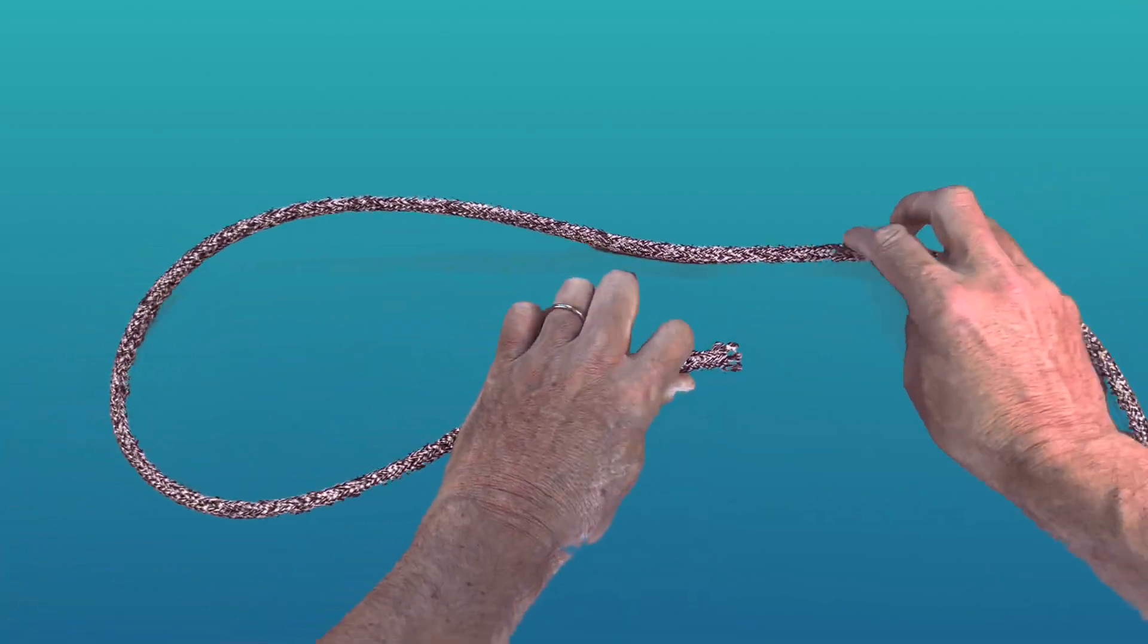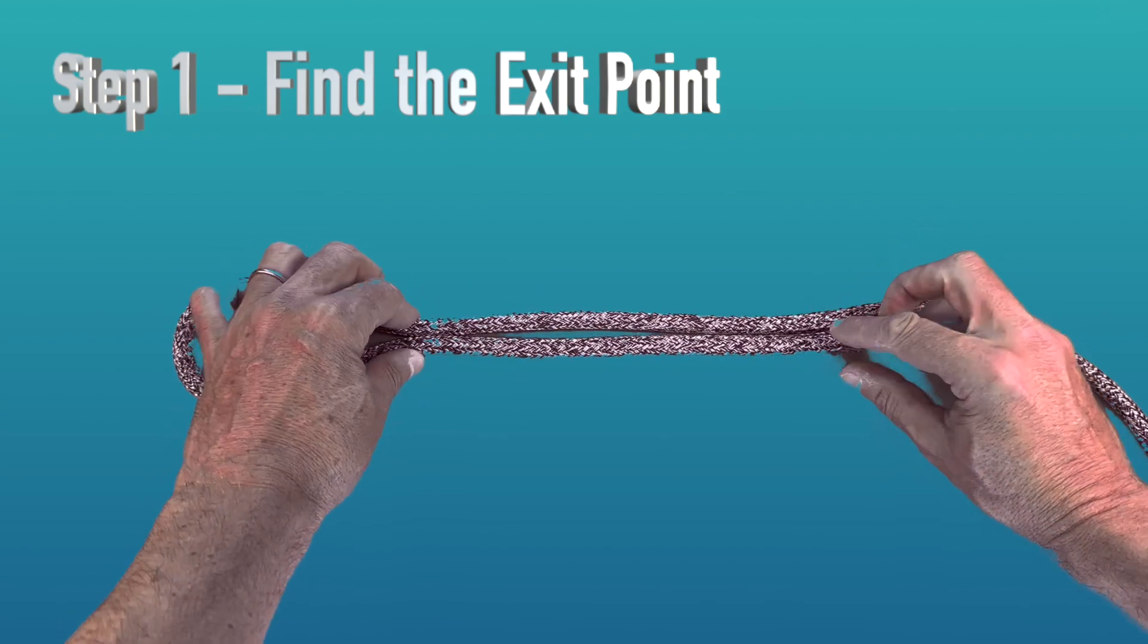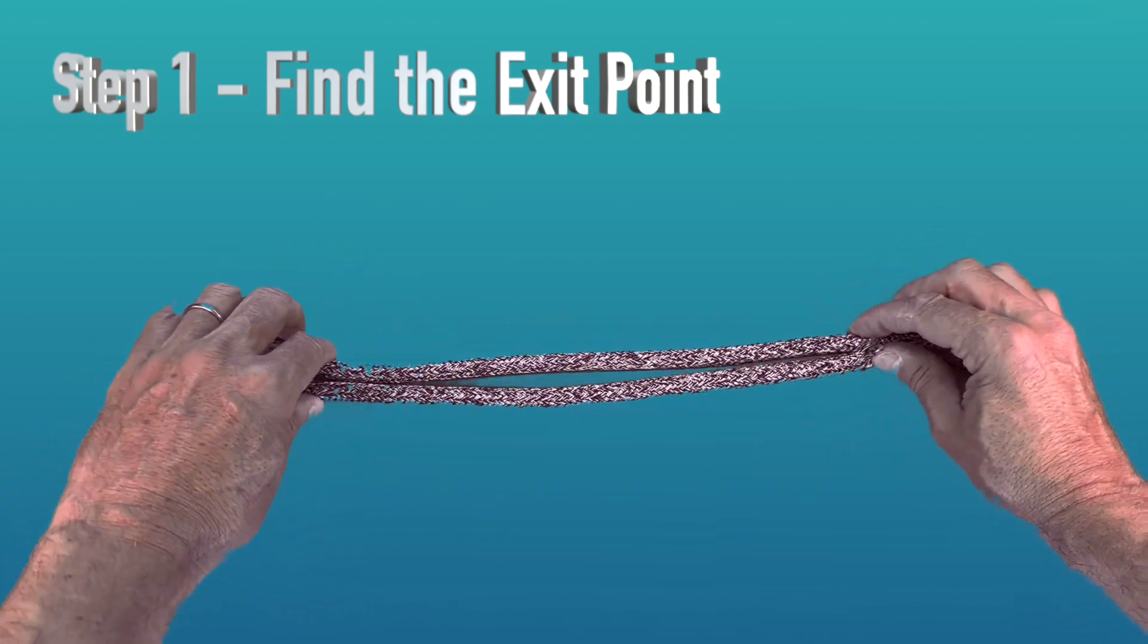Step number one, you want to put a bite in the end of the rope and with your left hand, nip it off where the size of the eye is and then pick up the working end at that point.